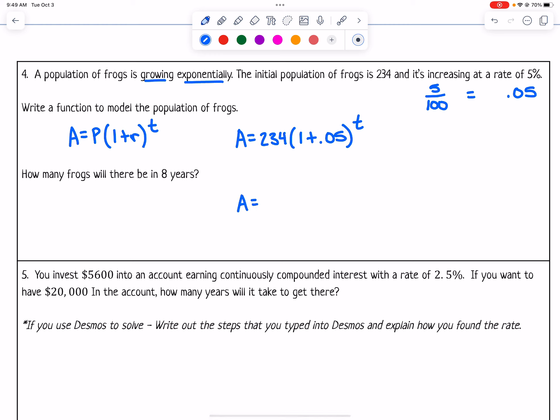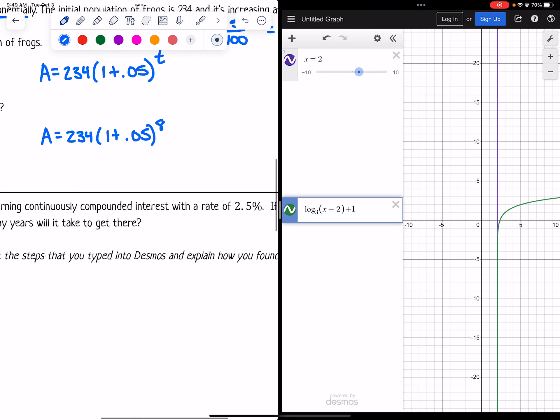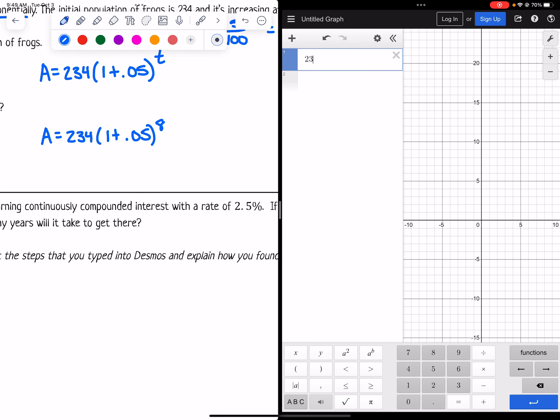I'm going to say A = 234(1 + 0.05)^8 because that's the time that they asked me about. Then I'm just going to type that in the calculator. So 234 times (1 + 0.05) to the 8th power gives me 345.7.